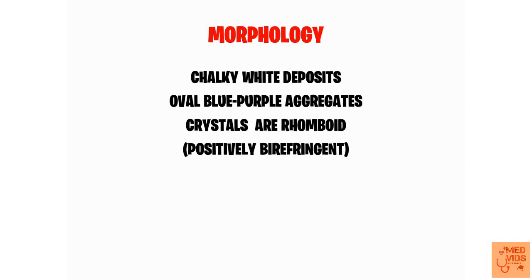Regarding morphology, there will be chalky white deposits because of the calcium pyrophosphate crystals. These crystals can get deposited in the articular cartilage, menisci, and intervertebral discs. When observed under a microscope after staining, they appear as oval blue-purple aggregates. In contrast to gout — where crystals are needle-like, sharp, and negatively birefringent — in pseudogout, the crystals are rhomboid in shape and positively birefringent.